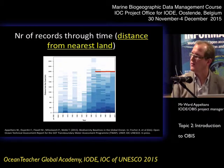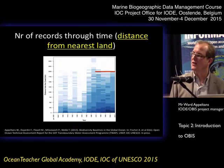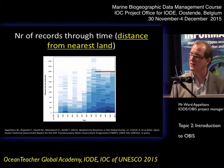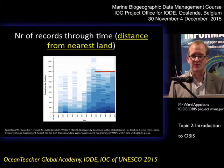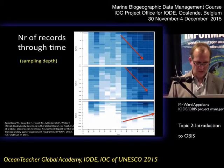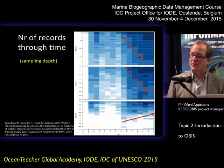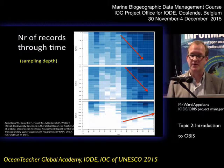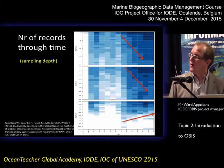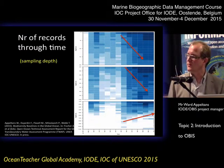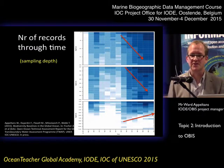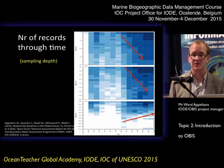There's a similar type of graph showing the number of records by distance from the nearest coastline. We see that there's a cutoff — 2,000 kilometers is very far away, so it's also very difficult to get records from those most remote places. In terms of depth, we are sampling more and more and going deeper and deeper in the ocean, except for the very deepest places. Beyond 5,000 meters, we have very, very little records, and that number is actually decreasing.